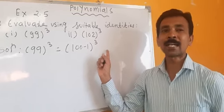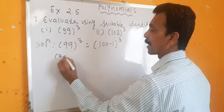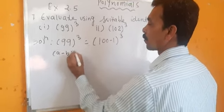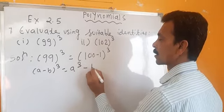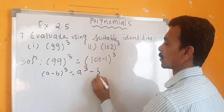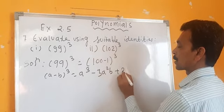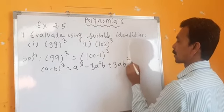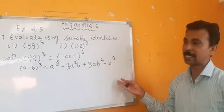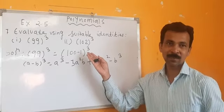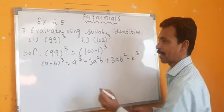It looks like the identity A minus B whole cube. A minus B whole cube is equal to A cube minus 3A squared B plus 3AB squared minus B cube. This is the identity — in questions 5 and 6 also we have seen this same identity, and we have to use it here.